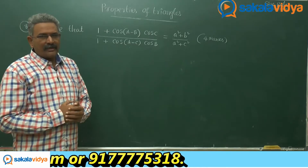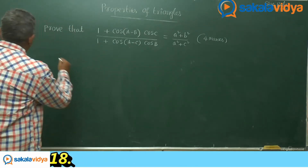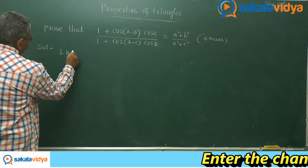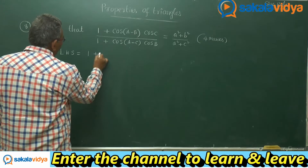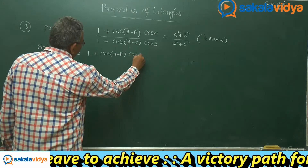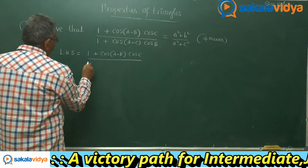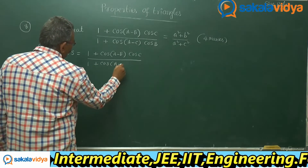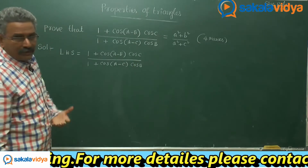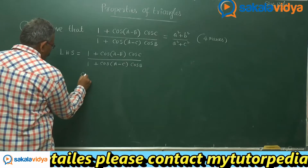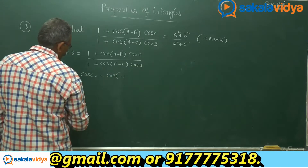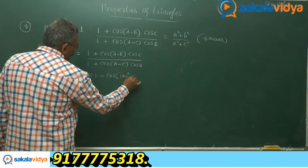Then easily we can solve this problem using the sine rule. Left hand side: that is nothing but 1 plus cos of (a minus b) times cos c, upon 1 plus cos of (a minus c) times cos b. As we have planned, let us change cos c. This cos c is nothing but minus cos of (180 degrees minus (a plus b)).